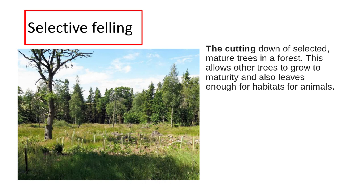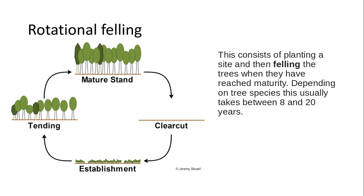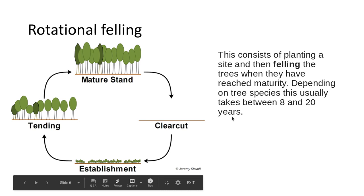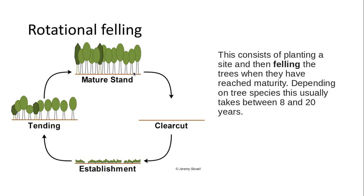Selective felling is where you cut down selected trees — normally the most mature trees in the forest — allowing others to reach maturity and leaving other areas as habitats for animals. Rotational felling involves cutting an area and then leaving the site to regrow back to maturity, which normally takes between 8 to 20 years depending upon the species of tree.